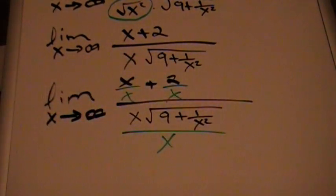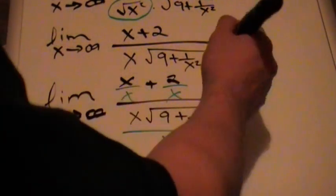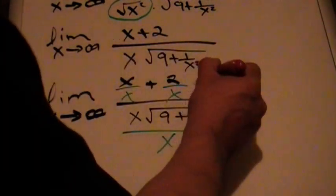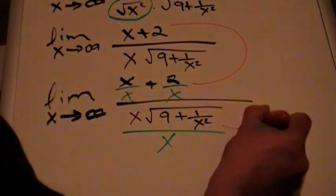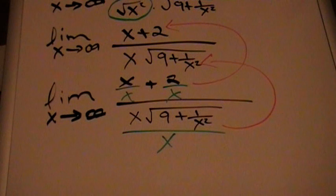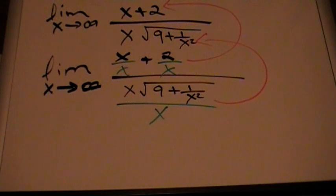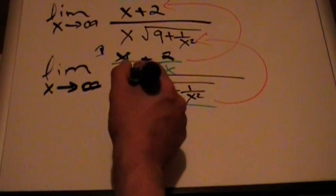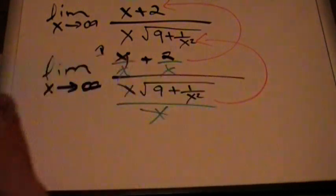So far I haven't changed the expression — if you multiply it back out you get the same thing. Now I can do some cancellations: x divided by x turns into 1, and the x on the bottom cancels with the x we divided by, leaving just √(9 + 1/x²).